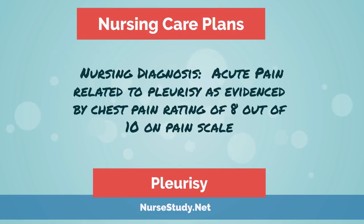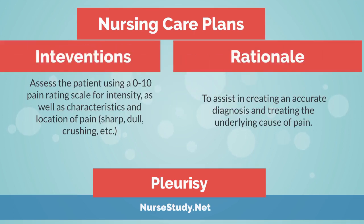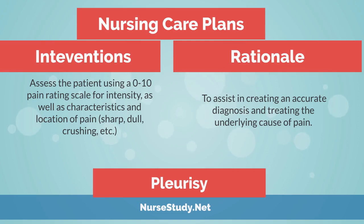Nursing care plans for pleurisy. Nursing diagnosis: Acute pain related to pleurisy, evidenced by chest pain rating of 8 out of 10 on pain scale. Desired outcome: The patient will report a decrease of pain level to 0 upon discharge. Intervention: Assess the patient using a 0 to 10 pain rating scale for intensity, as well as characteristics and location of pain — sharp, dull, crushing, etc. Rationale: To assist in creating an accurate diagnosis and treating the underlying cause of pain.